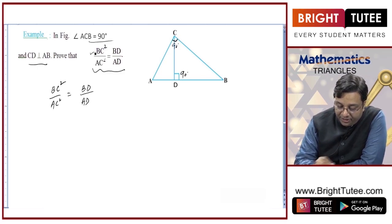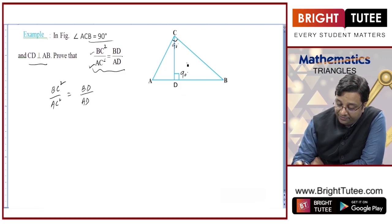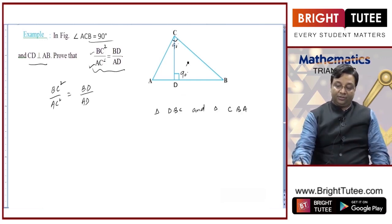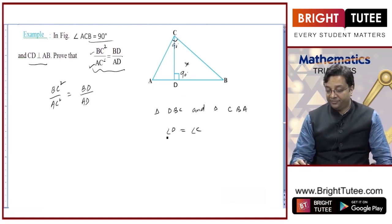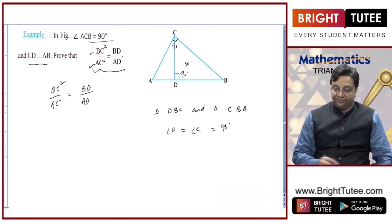If I can obtain BC² and AC² separately, then I will divide BC² by AC². Consider triangle DBC and triangle CBA — the smaller one and the bigger one. Angle D equals angle C because both are equal to 90 degrees.